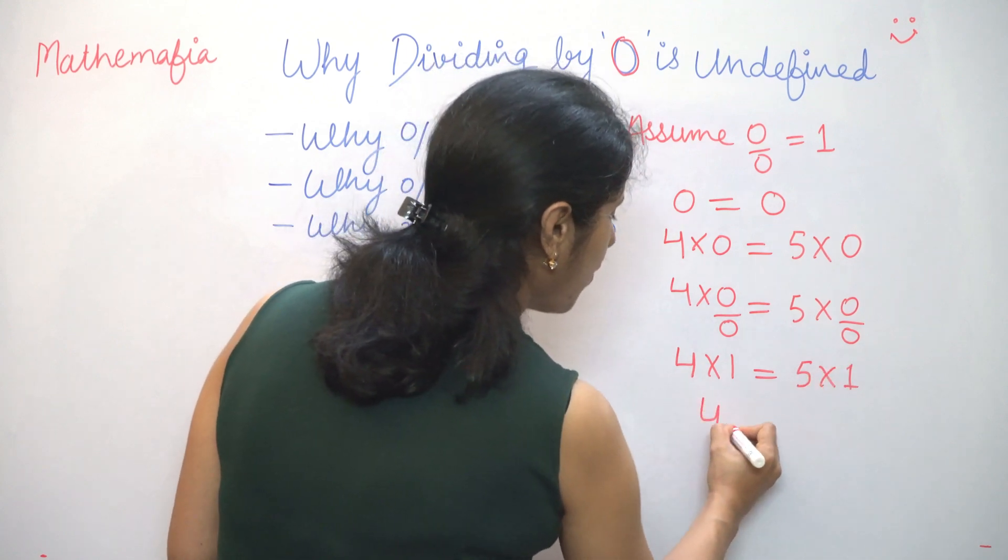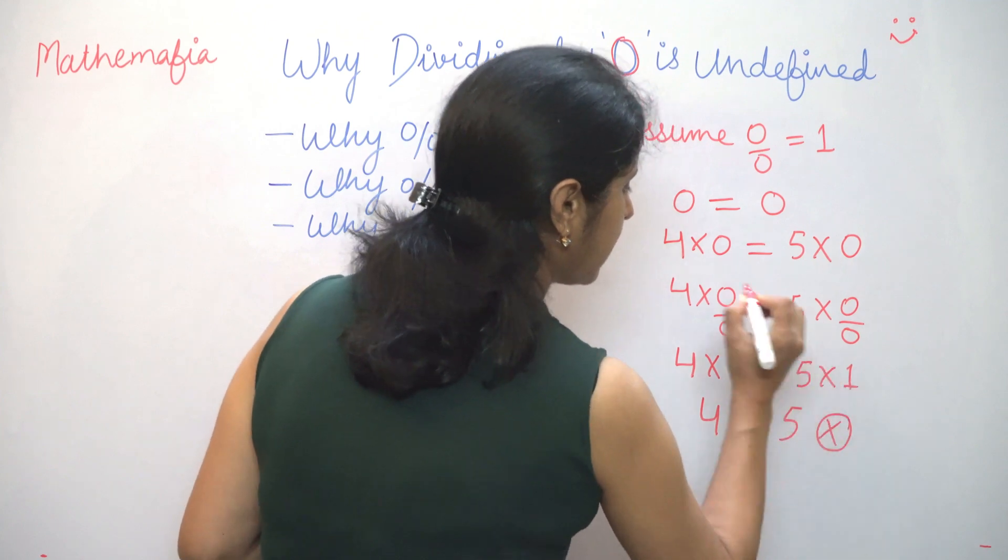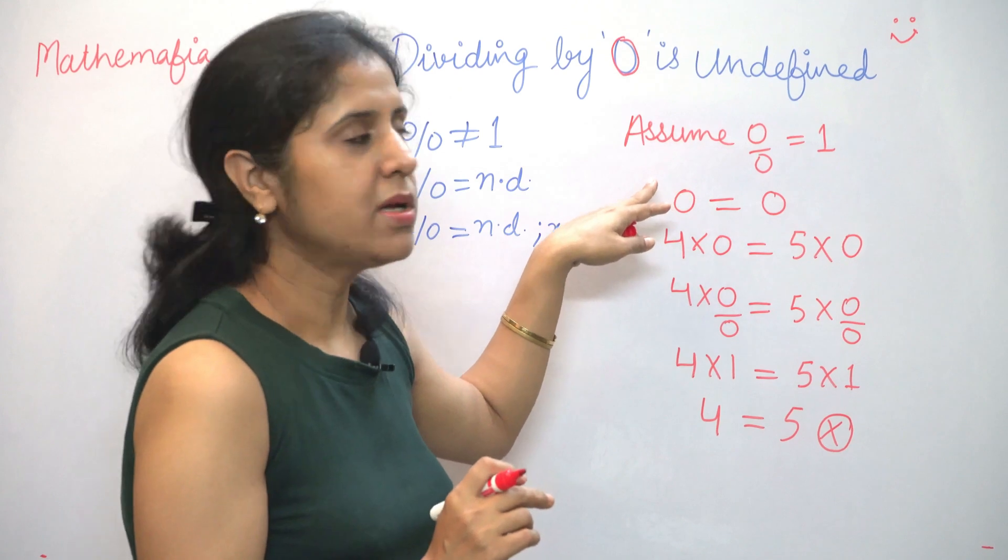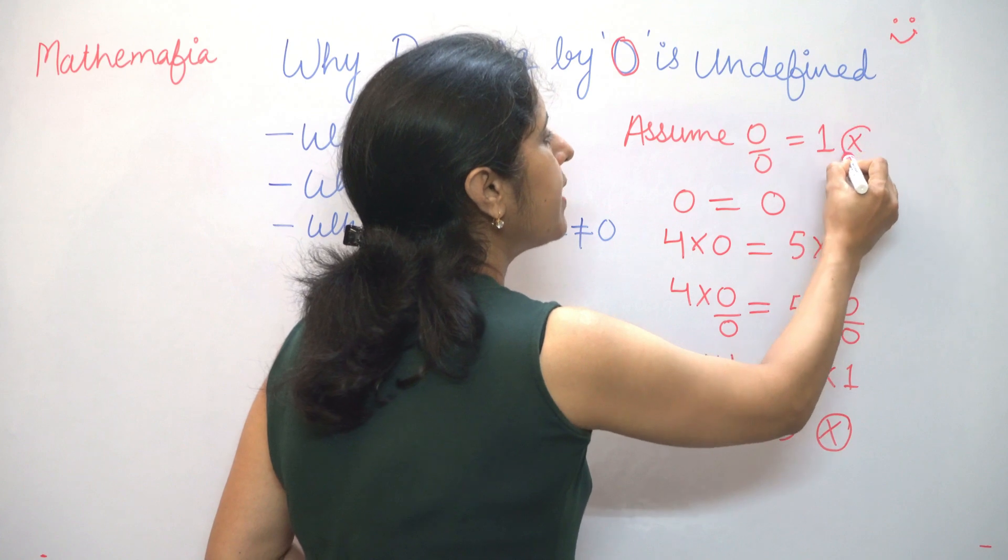Which means 4 is equal to 5, which is not the case. So we have reached a contradiction. So our assumption was wrong. This means that 0 by 0 is not equal to 1.